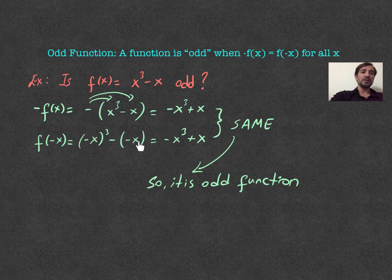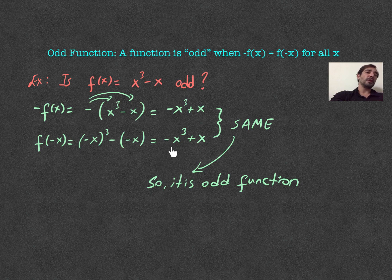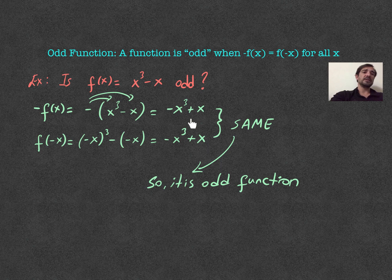So, I just put it into the bracket. As you see, negative and negative sign will make it positive. I'm going to get the same result. So, negative x power of 3 plus x. Which is the same as negative f of x. So, it is odd function.